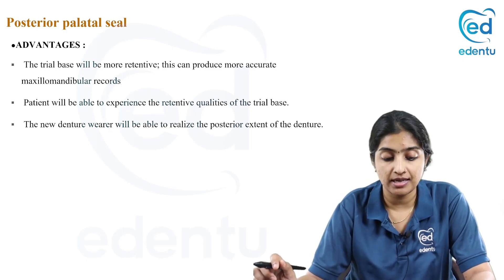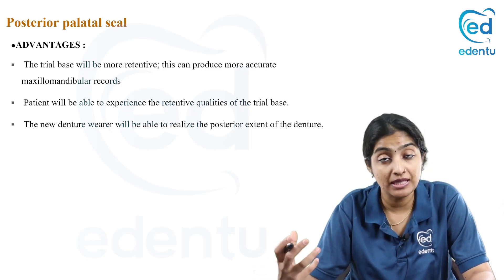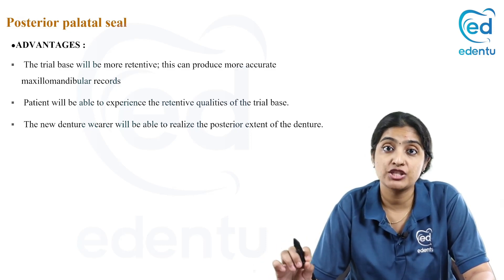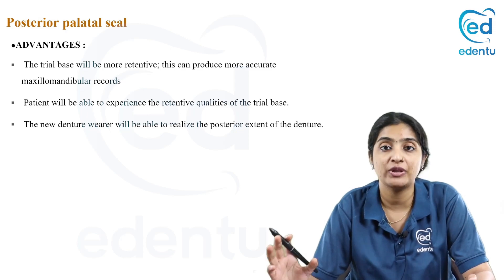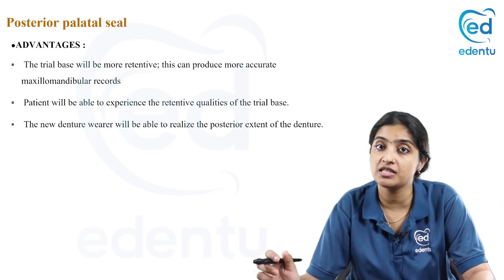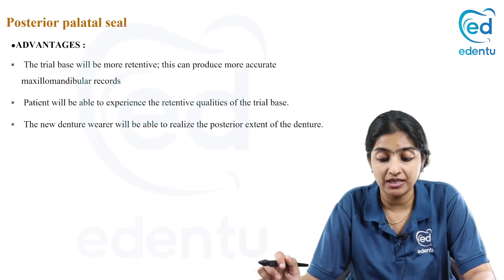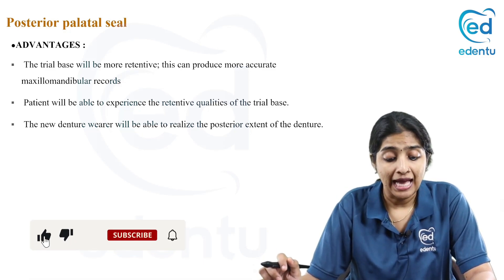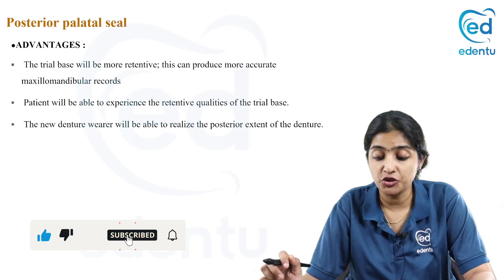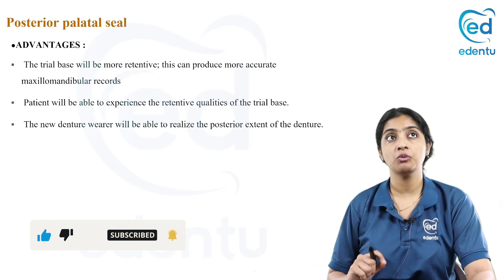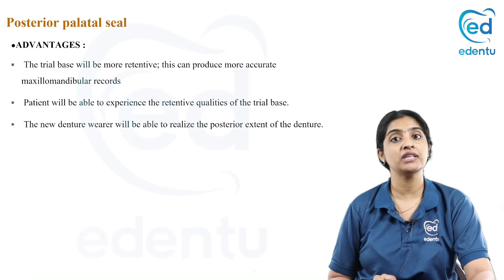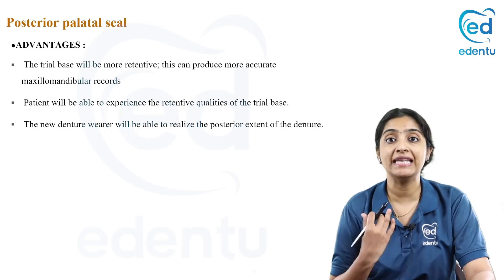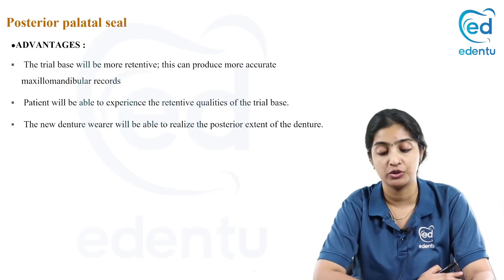The advantage of using this technique is that the trial base itself becomes more retentive, and this will produce a more accurate maxillomandibular relation — that is, when you take the jaw relation, your denture base is much more stable. The patient will be able to experience the retentive qualities of the denture base. The new denture bearer will be able to realize the posterior extent of the denture, so that when you give a trial, the patient understands the retention and also the posterior limits of the denture, preparing them to receive the new denture.